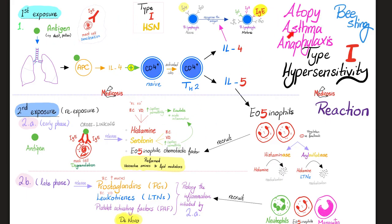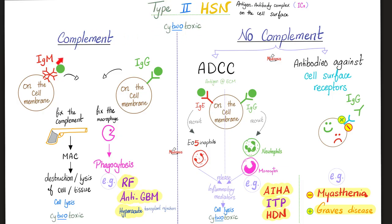Type 1: atopy, asthma, anaphylaxis — all about histamine, leukotrienes, eosinophils. Type 2 is cytotoxic. We have complement-mediated — rheumatic fever, anti-glomerular basement membrane antibody disease, hyperacute organ transplant rejection — and non-complement-mediated: autoimmune hemolytic anemia, autoimmune thrombocytopenia, hemolytic disease of the newborn, via the ADCC mechanism. Cell surface receptors targeted: antibody inhibits in myasthenia gravis, antibody stimulates in Graves' disease.